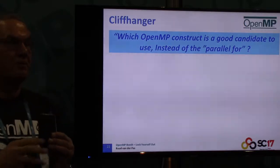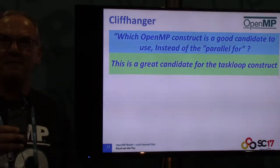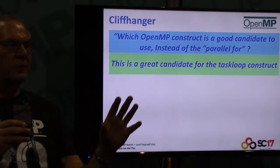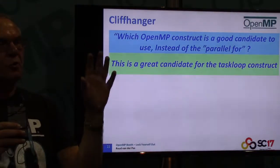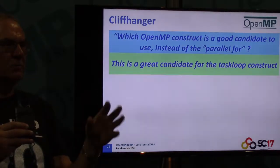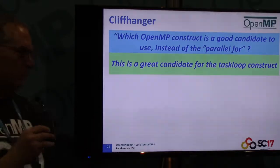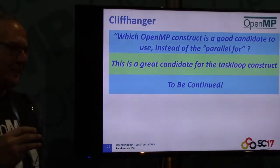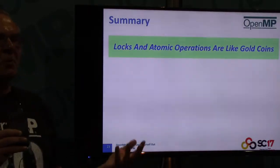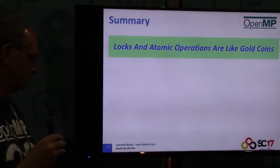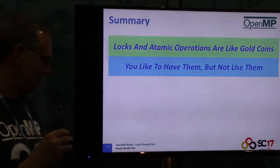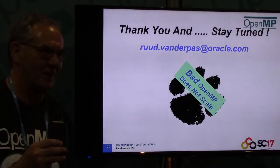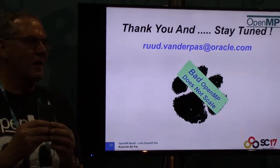For the load-balancing issue I gave up, the answer is the new taskloop construct in OpenMP. The taskloop is a loop that underneath uses tasking, giving you more control over load balancing via extra clauses. Unfortunately I didn't have time to try it — maybe next year at SC18. To summarize: locks and atomics are like gold coins — you like to have them but you don't want to use them. And if somebody tells you OpenMP does not scale, you should say: bad OpenMP does not scale. Thank you very much.